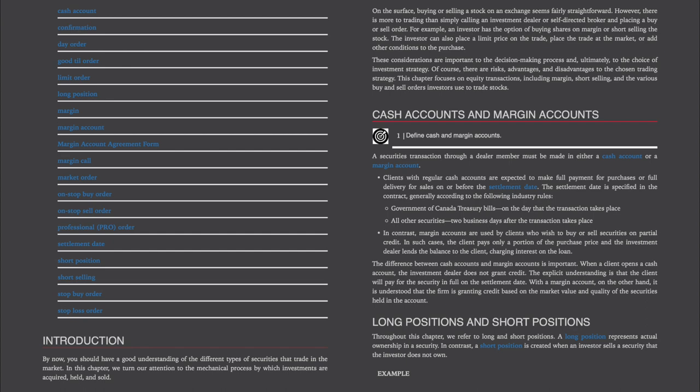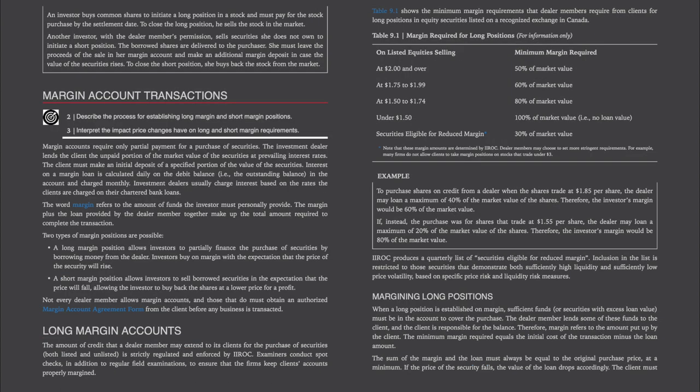Long positions and short positions. Throughout this chapter, we refer to long and short positions. A long position represents actual ownership in a security. In contrast, a short position is created when an investor sells a security that the investor does not own. An investor buys common shares to initiate a long position in a stock and must pay for the stock purchased by the settlement date. To close the long position, he sells the stock in the market.